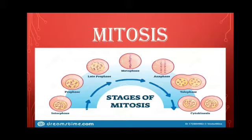Karyokinesis is the division of the nucleus and occurs in four main phases: prophase, metaphase, anaphase, and telophase. Let us begin with the interphase so that you can understand how the cell transitions from interphase to the next dividing phase, which is mitosis. The interphase is also known as the resting phase as no visible change is seen in the chromosomes, but actually the active synthesis of DNA takes place in this phase.